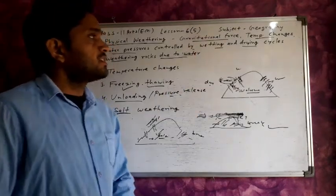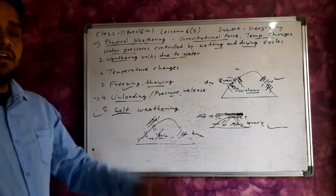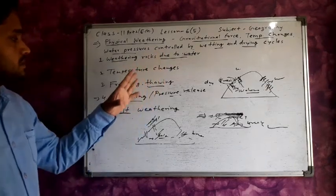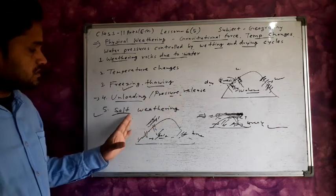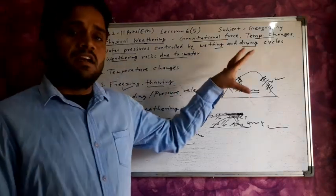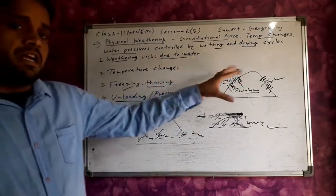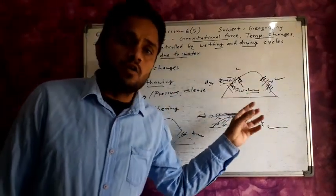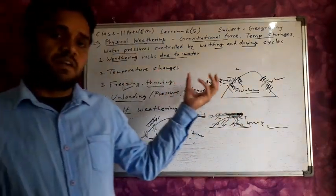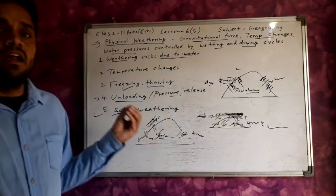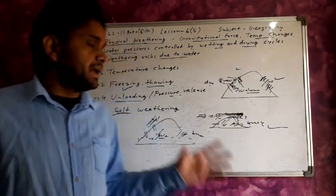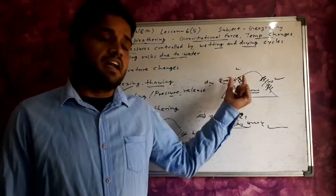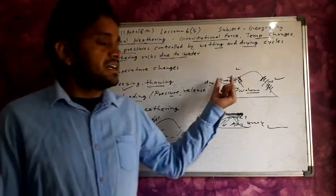To summarize, the responsible factors for physical weathering are gravitational force, temperature change, and water pressure controlled by wetting and drying cycles. The processes are: weathering due to water — where high temperature rocks crack upon rainfall; temperature changes — where daytime expansion and nighttime contraction break rocks; and freezing and thawing — where water in cracks freezes at night in temperate regions.